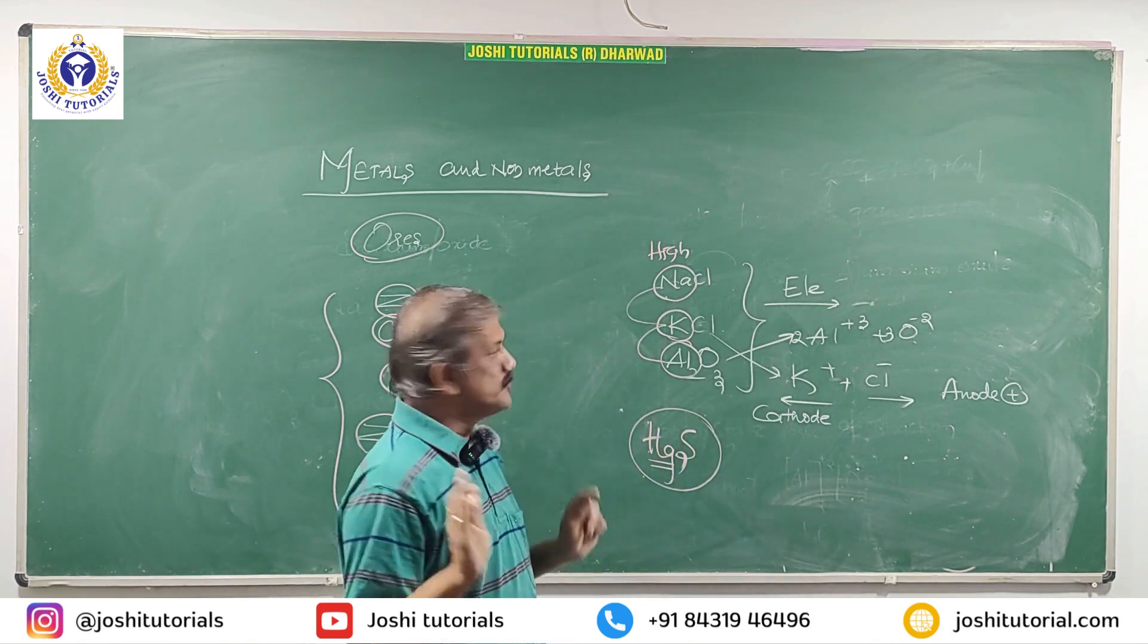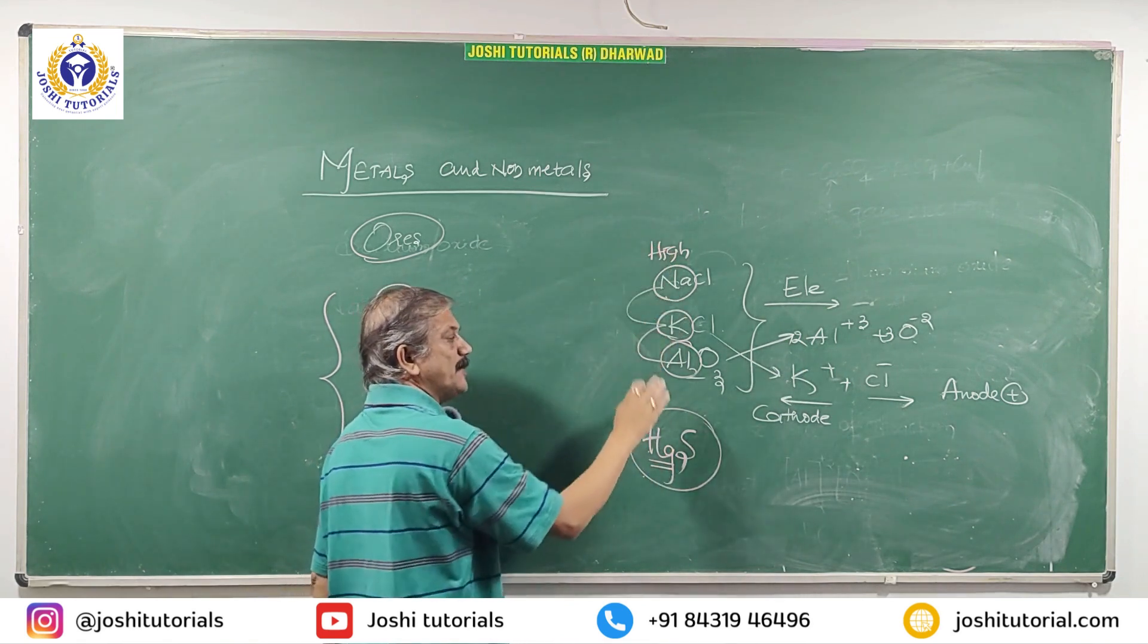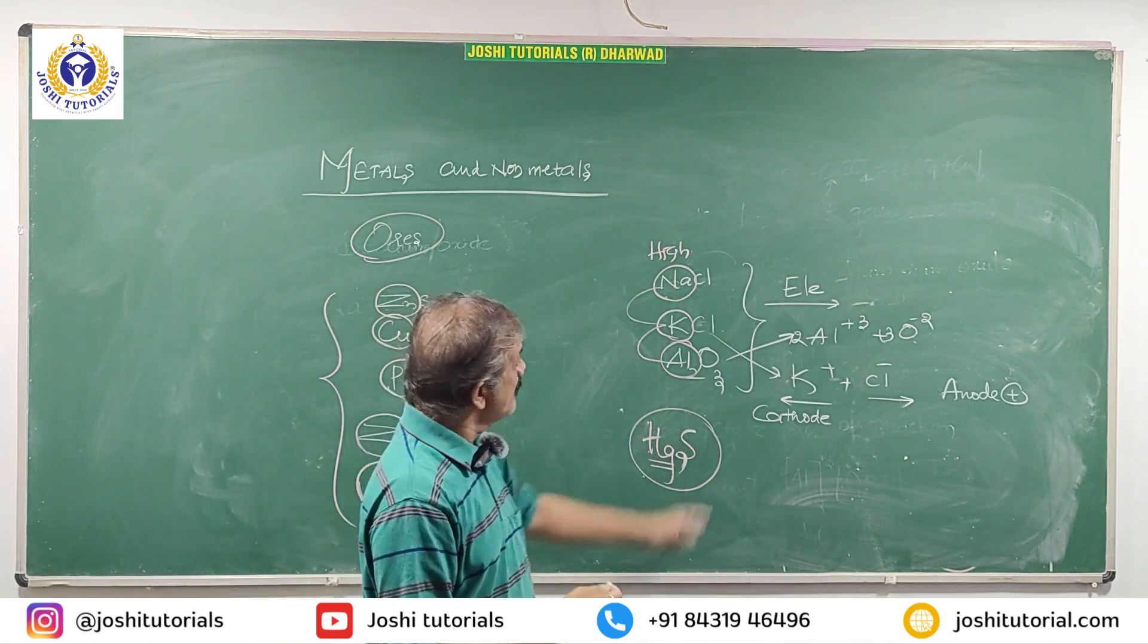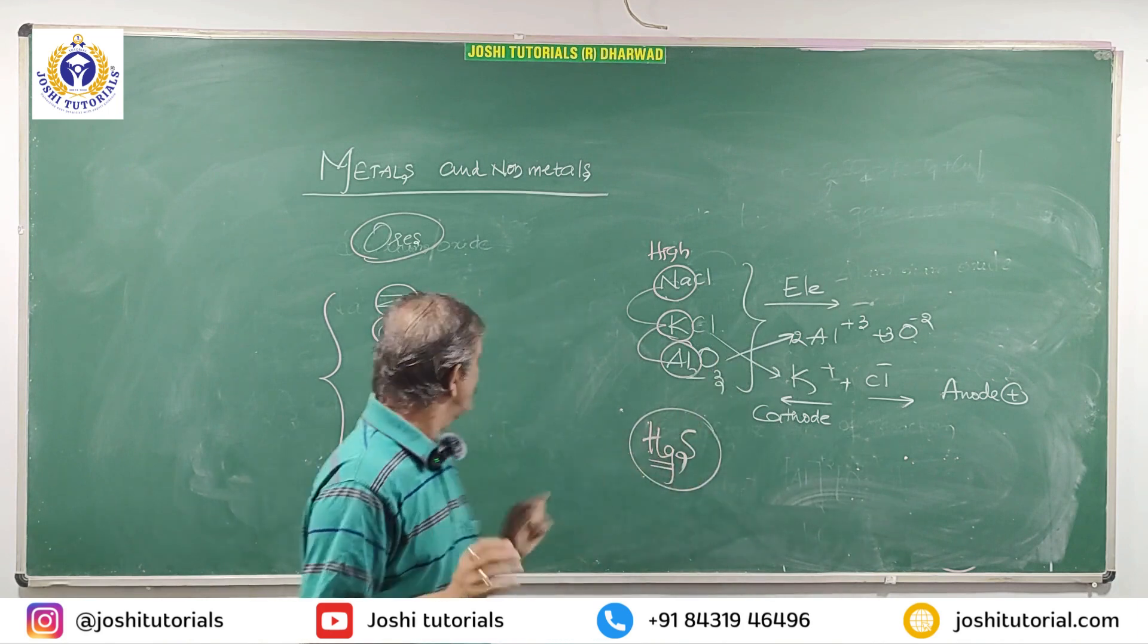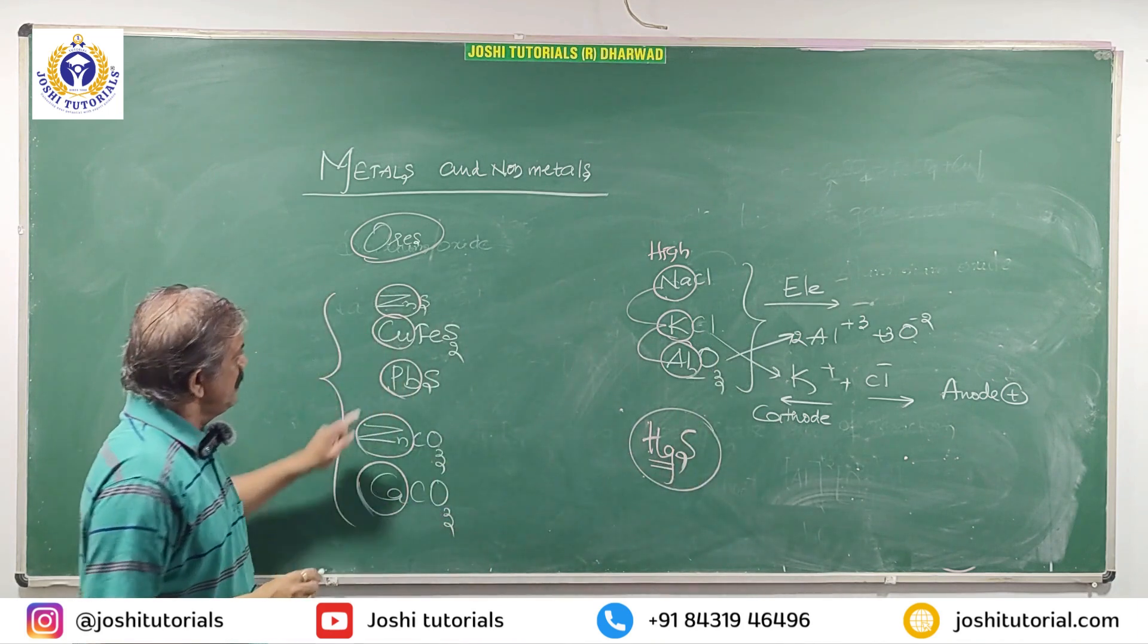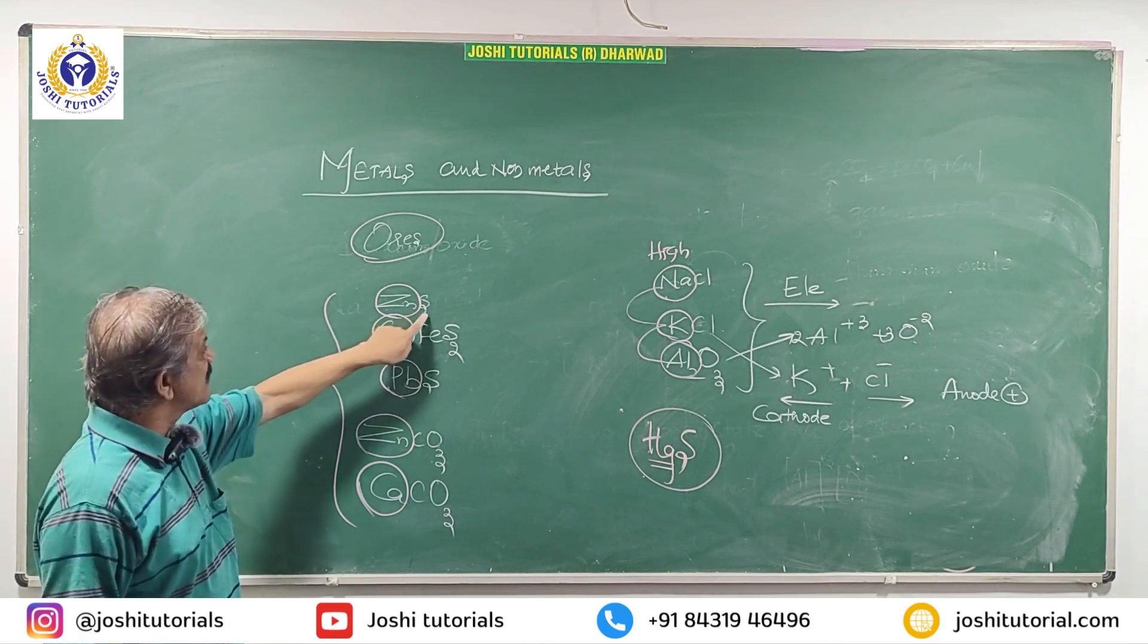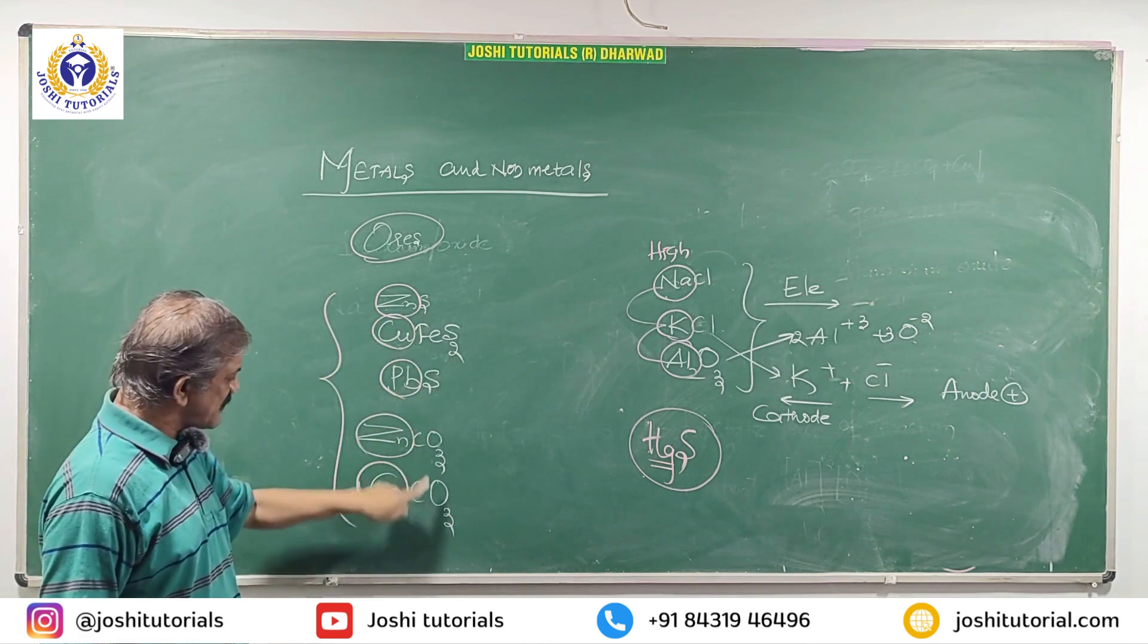No other methods. It means highly reactive elements are obtained - I mean metals are obtained from their ores by passing electricity. Metal reactivity contain two types, one is sulfides and one is carbonates.